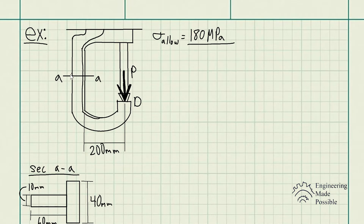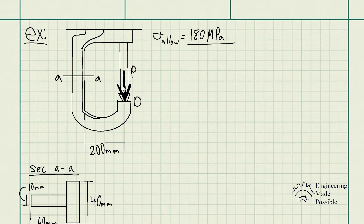We're being asked at section AA, where we have the cross-section — in this case it's a T cross-section with the given dimensions. Since we have a force P and we're focusing only on section AA, that essentially means we have an axial force P pulling this, or trying to lengthen the gripper itself.